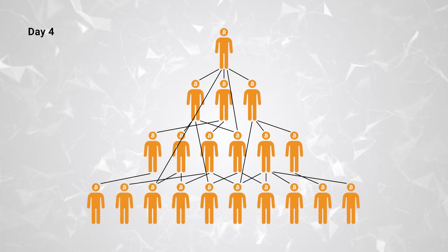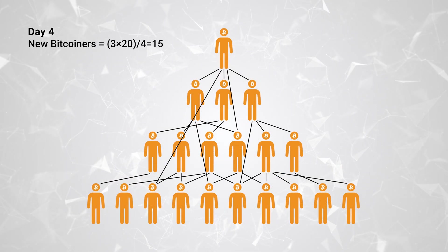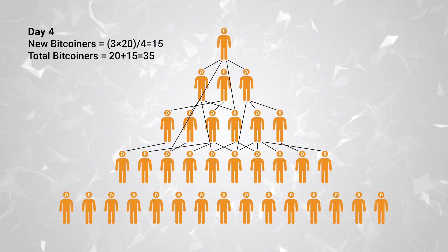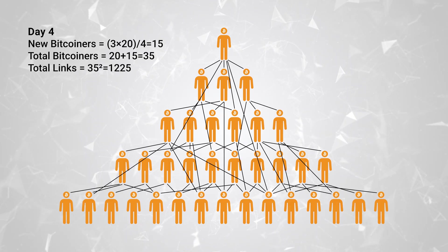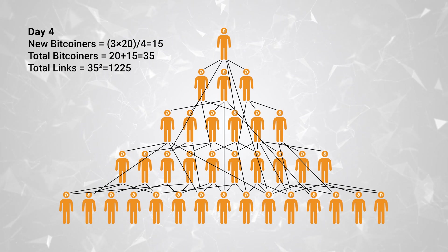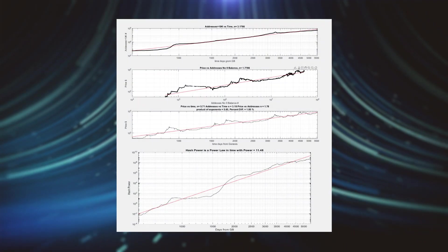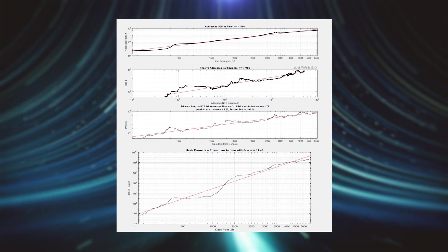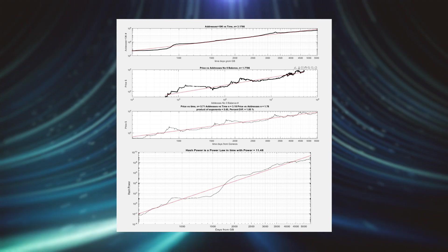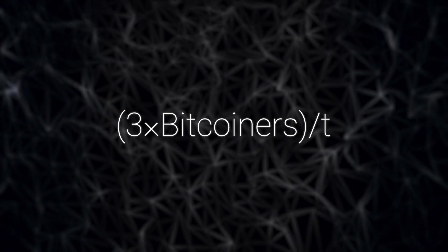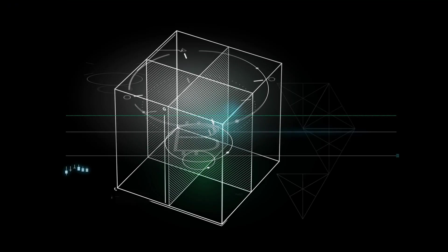On day 4, we start with 20 Bitcoiners. This time, we multiply 3 by 20, and divide it by 4, giving us 15 new Bitcoiners. Adding them to the group, we now have 35 Bitcoiners in total. The number of links grows even more dramatically, bringing us to a whopping 1225 links. And there you have it, the growth of Bitcoiners and their links over just 4 days. It's a powerful example of how networks expand, starting from just a few people. Even though this growth might seem exponential at first, it is actually slowing down, thanks to the 1 over t part of our simulation. This curbing mechanism is innate to the power law, and the change in Bitcoiners really just boils down to 3 multiplied by the number of Bitcoiners divided by the age of the system, or the number of days since the Genesis block.